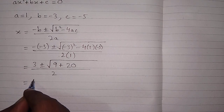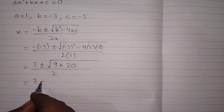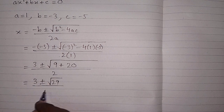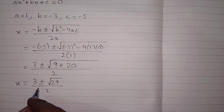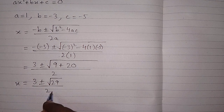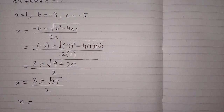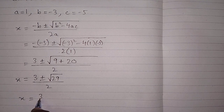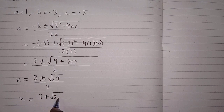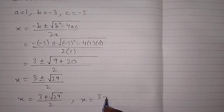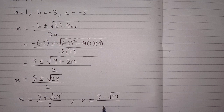So this simplifies to 3 plus minus square root of 29 upon 2. Therefore the value of x is 3 plus square root of 29 upon 2, or the value of x is 3 minus square root of 29 upon 2.